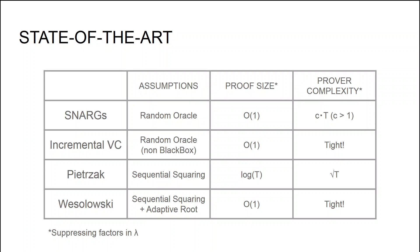An improved construction suggested by Boneh et al. builds on incremental verifiable computation, which achieves constant size proof but this time optimal prover complexity — meaning the proving algorithm runs in time exactly t. However, the price to pay for such efficiency is the non-black-box use of the random oracle model, in particular through recursive composition of succinct non-interactive arguments. At present it is not known how to construct incremental verifiable computation making only black-box use of the random oracle model, which also means that in practice these constructions are typically much less efficient than plain SNARK-based ones.